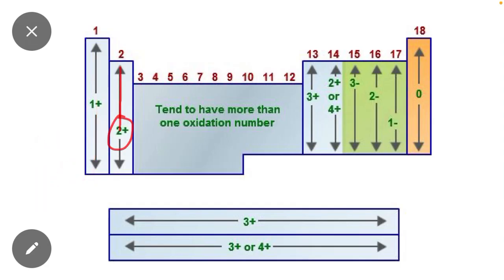Similarly, group two elements always show plus two oxidation state. Group 13 elements always show plus three oxidation state.